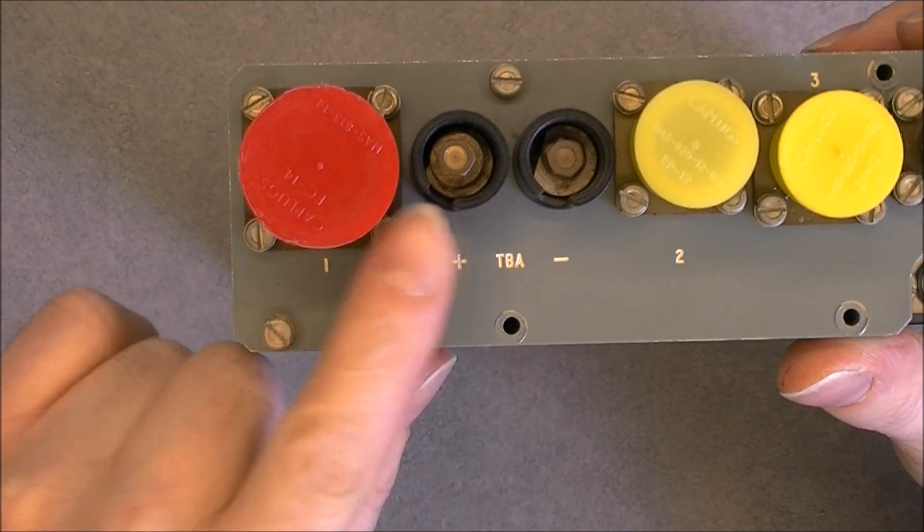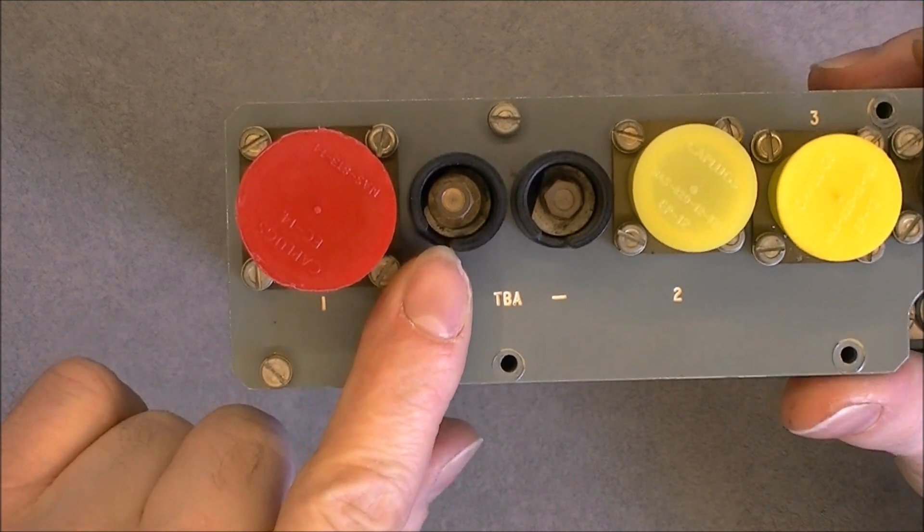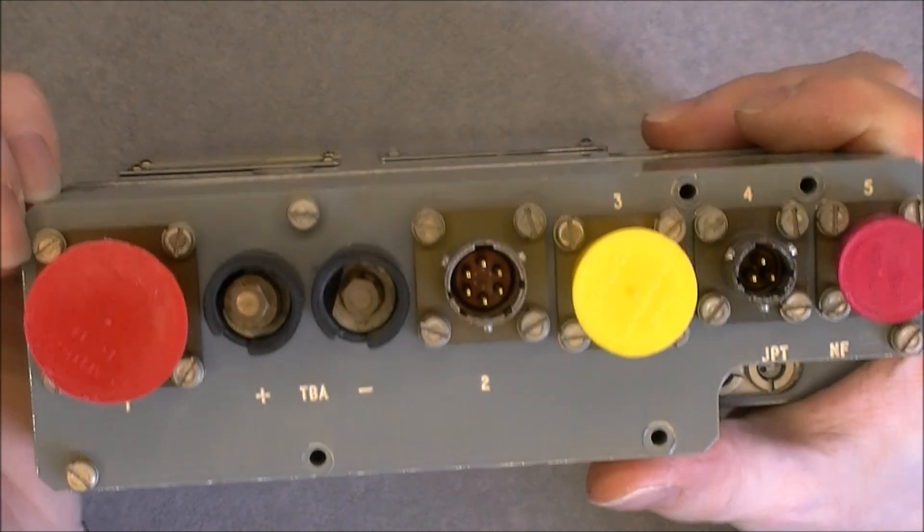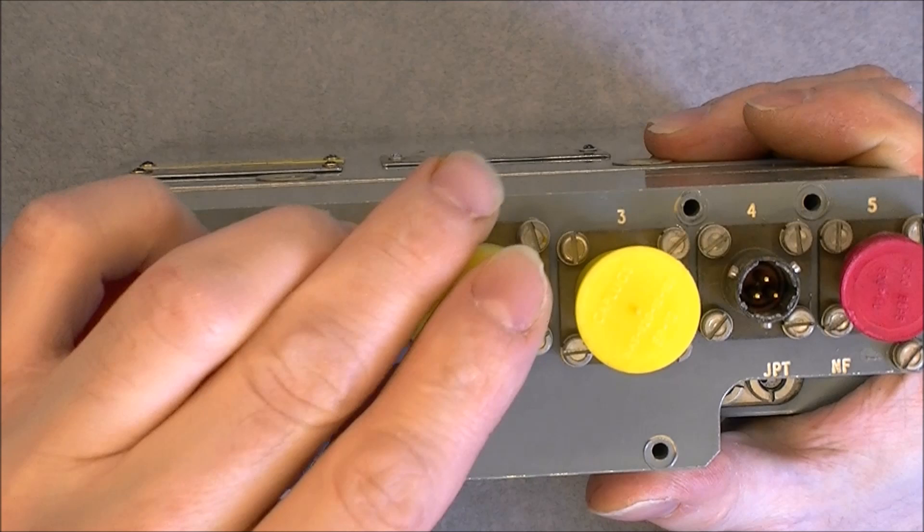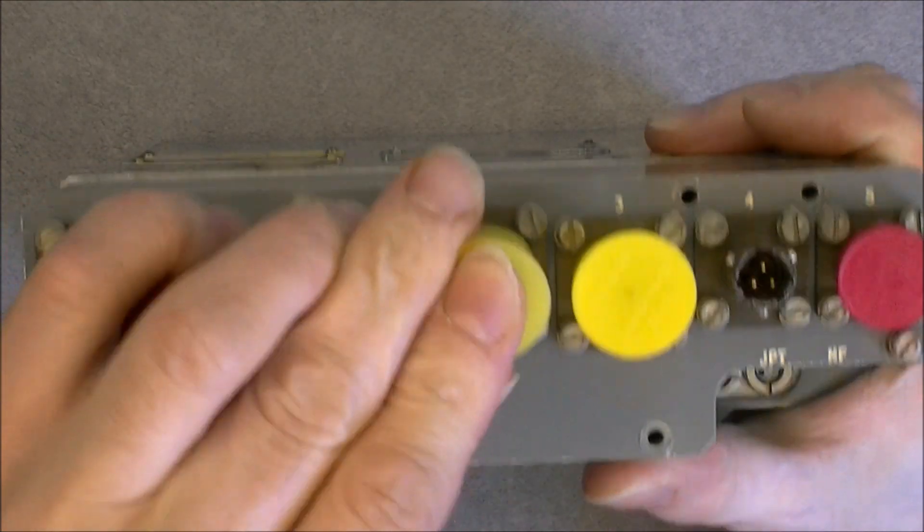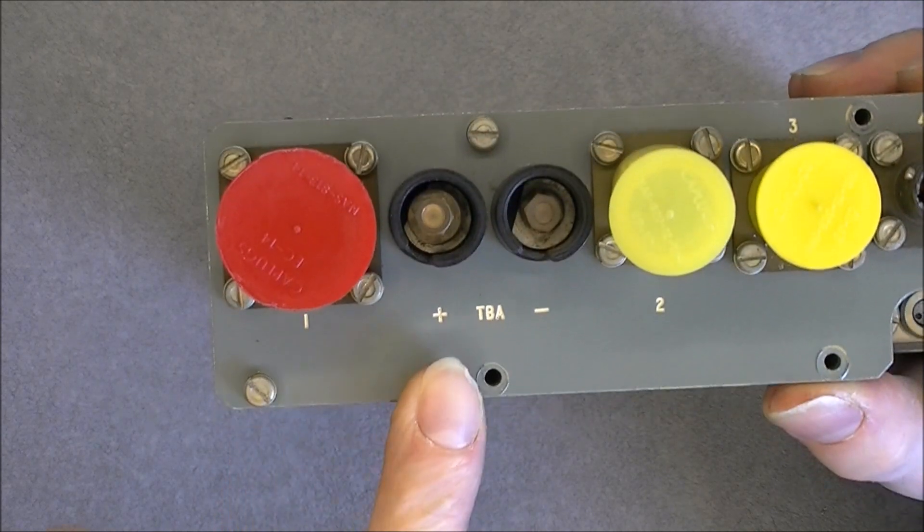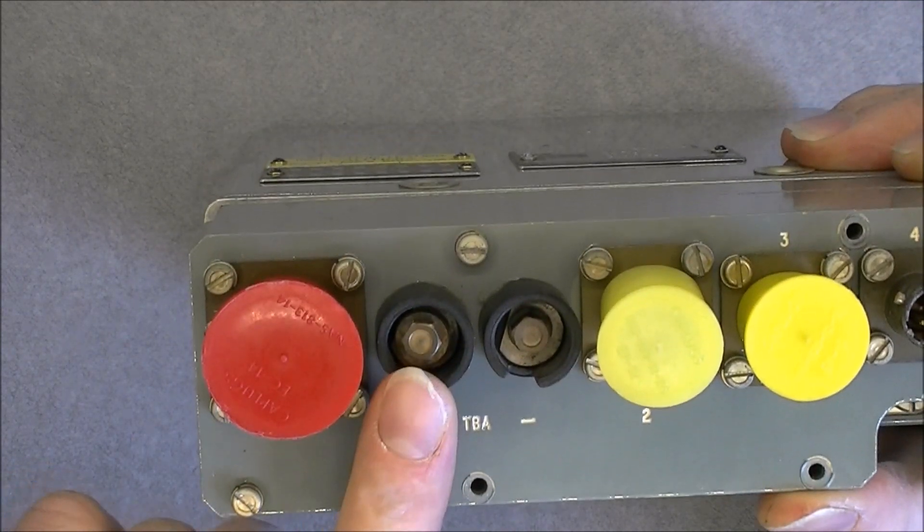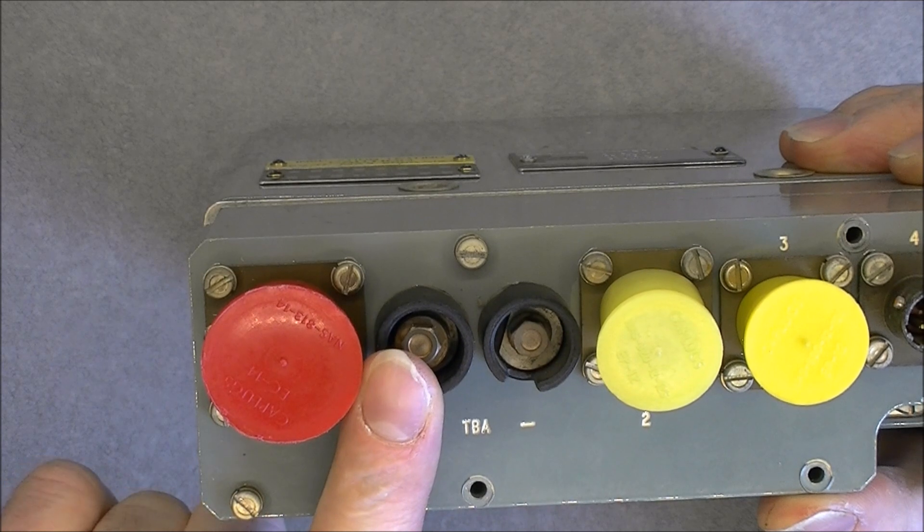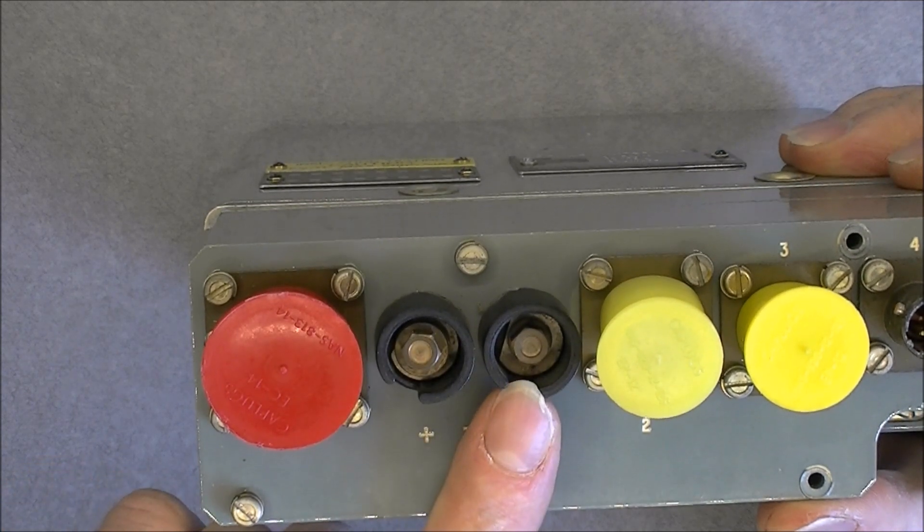We will try to figure them out later in the video probably. Six pins connectors here. And three pin connectors here. So they are called plug number 1. TBA plus or minus. So maybe it is where your actual temperature sensing device is connected.